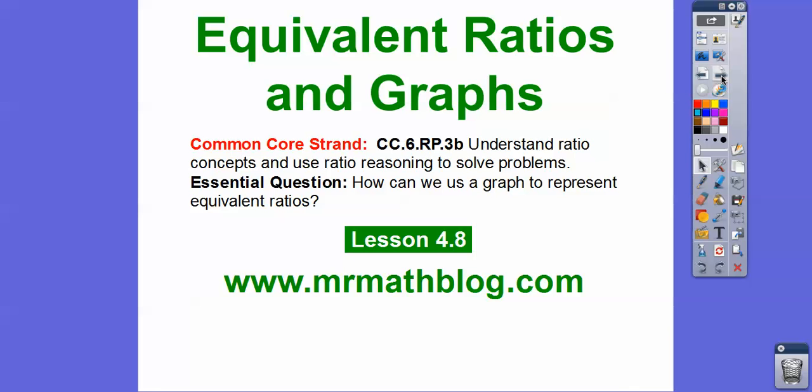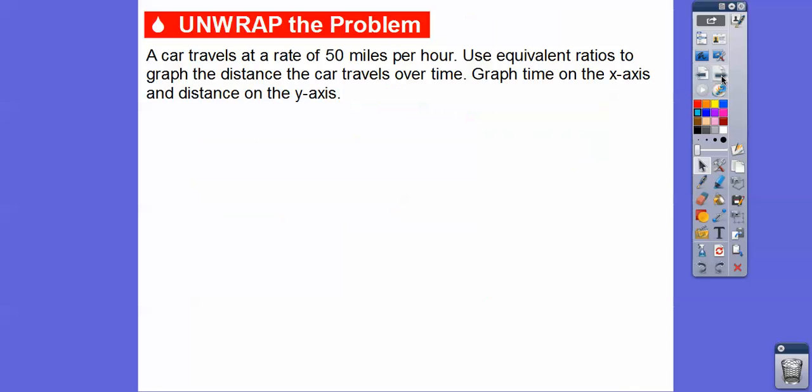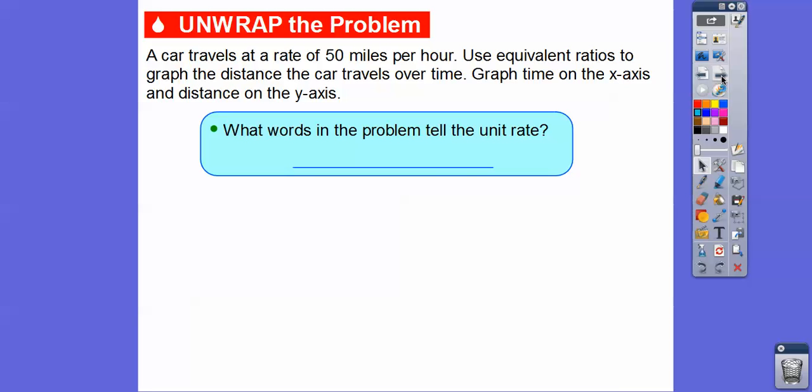Here's our essential question: how can we use a graph to represent ratios? So here's an example. A car travels at a rate of 50 miles per hour. Use equivalent ratios — remember, ratios are a form of a fraction — to graph the distance the car travels over time. Graph time on the x-axis and distance on the y-axis. So what words in this problem tell us the unit rate? Right here it says 50 miles per hour, so per one hour.